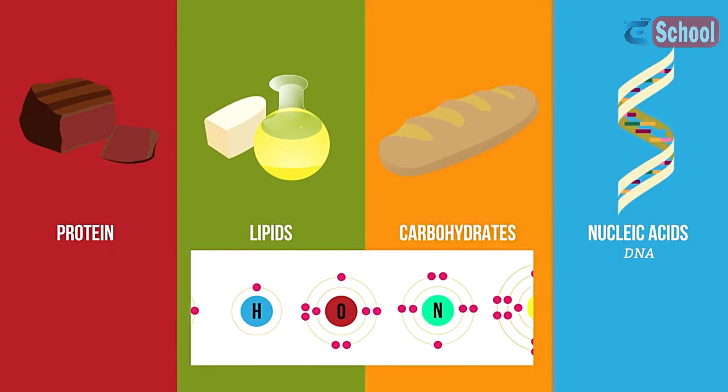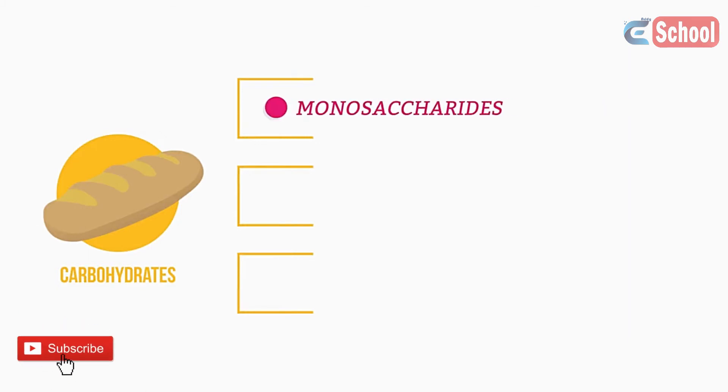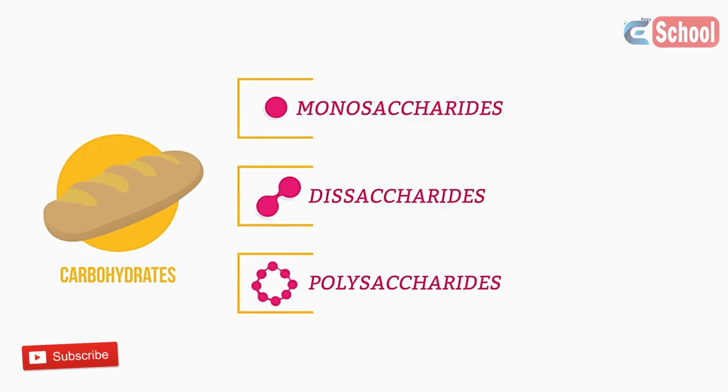Let's start by looking at carbohydrates. There are three main types of carbohydrate: monosaccharides, disaccharides, and polysaccharides.